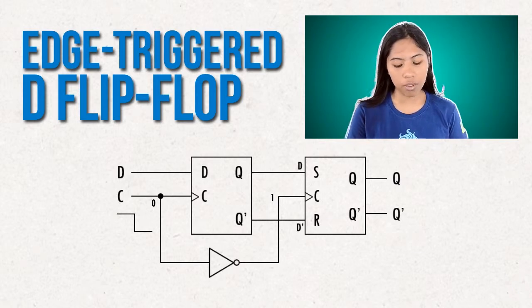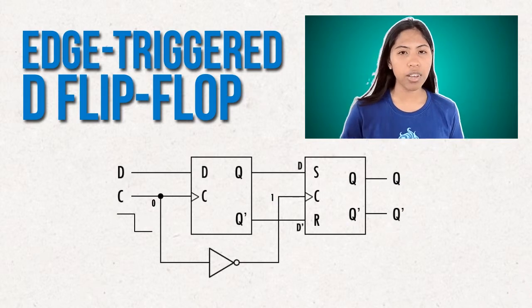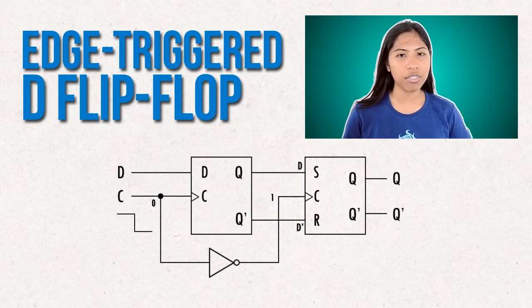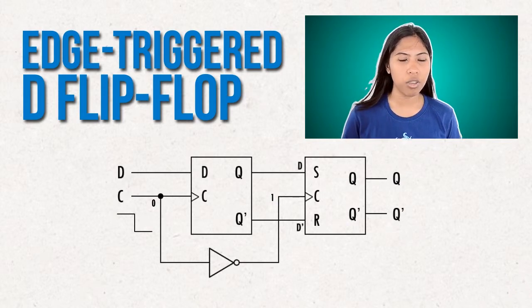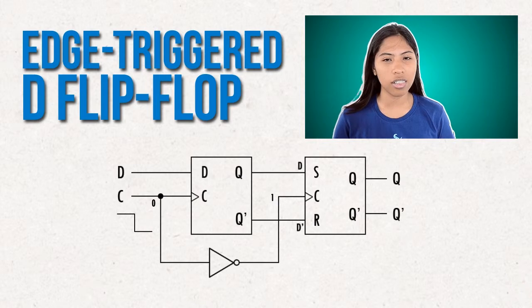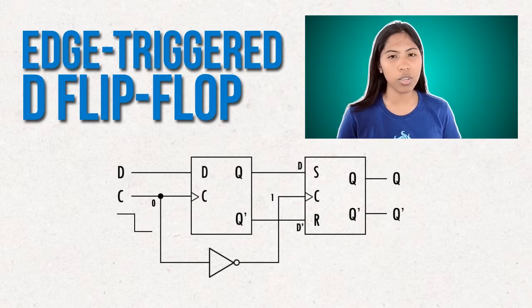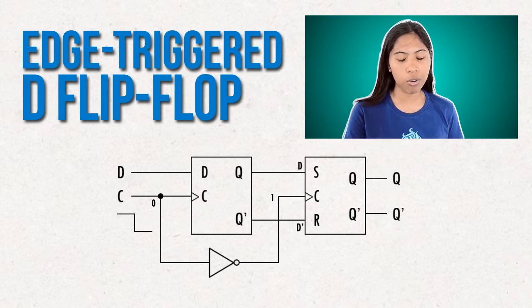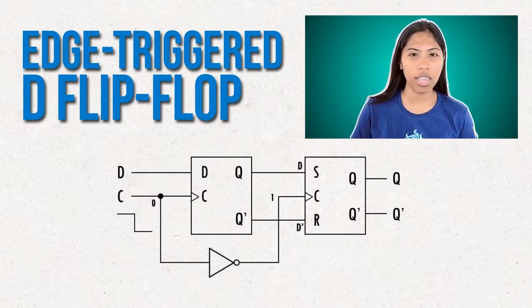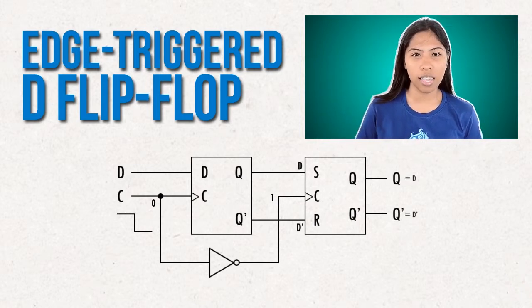The input value of S and R will now be transferred to Q. The output of Q will now be D and not D.